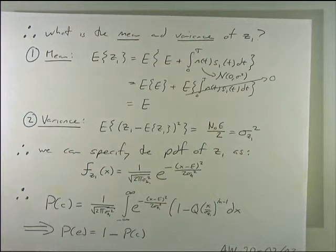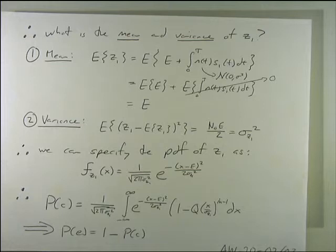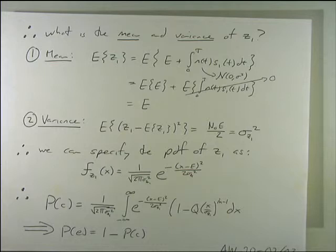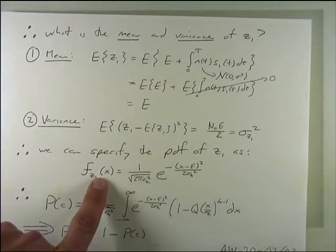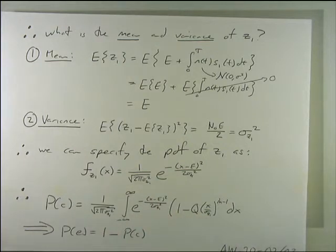Let's find the mean and variance of Z1. Z1 equals the signal energy plus noise N1. The expected value of N1 is zero, and the energy is deterministic, so the mean of Z1 equals E — the signal energy. We then do the calculations for the variance and get a clean answer. We can then integrate and average across all these Q functions to get the probability of error.